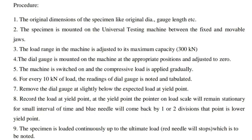Procedure: Step 1 — Measure the original dimensions of the specimen, such as original diameter, gauge length, etc. Step 2 — Mount the specimen on the universal testing machine between the fixed and movable jaws. Step 3 — Adjust the load range in the machine to its maximum capacity of 300 kN.